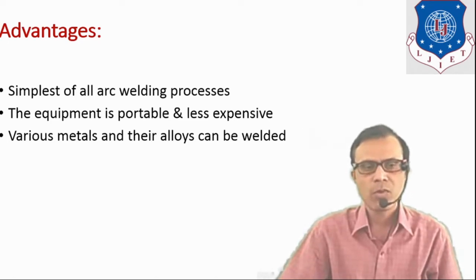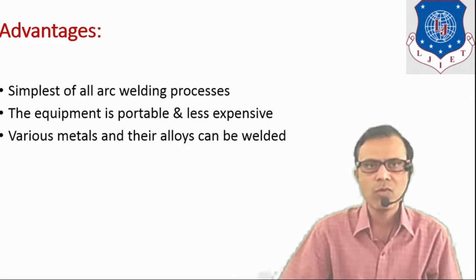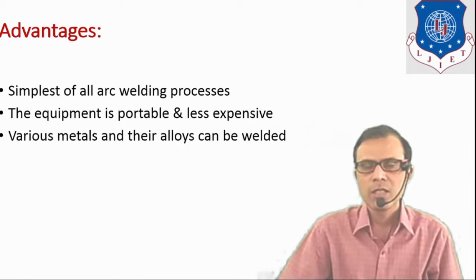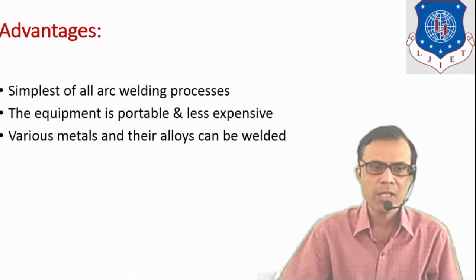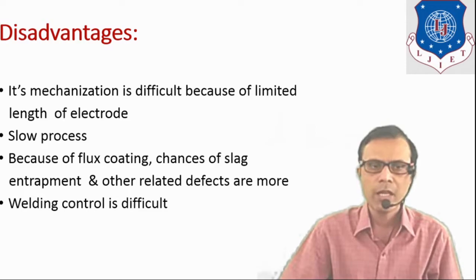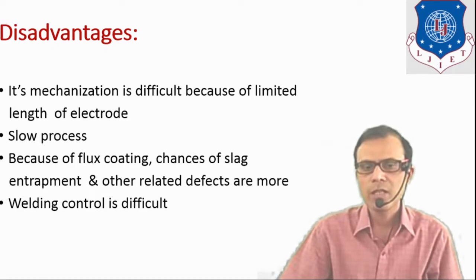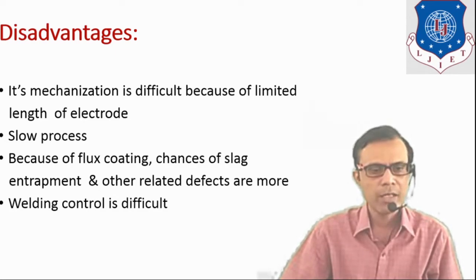So advantages of this process is, it is almost simplest of all arc welding process. Equipment is portable. Comparatively, it is less expensive. And various metal. And disadvantages of this process are, its mechanization is difficult because of limited length of the electrode. Comparatively, it is slower process. Because of flux coating, chances of slag entrapment and other related defects are there. And welding control is difficult.